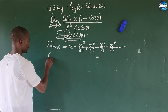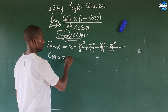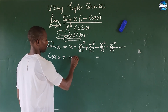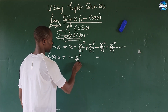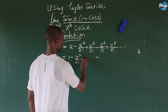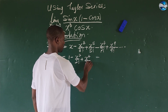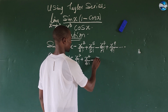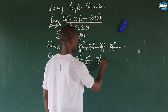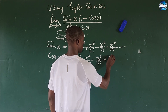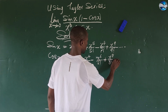Then we look for cos(x). We know that cos(x) is equal to one minus x to the power of two all over two factorial, plus x to the power of four all over four factorial, minus x to the power of six all over six factorial, plus x to the power of eight all over eight factorial, and so on.